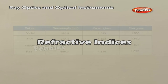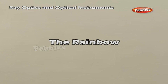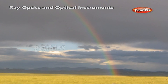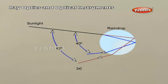Refractive indices for different wavelengths for crown glass and flint glass are listed in the table. The rainbow: sunlight is first refracted as it enters a raindrop, which causes the different wavelengths of white light to separate. Longer wavelengths of light, red, are bent least, while the shorter wavelengths, violet, are bent the most.